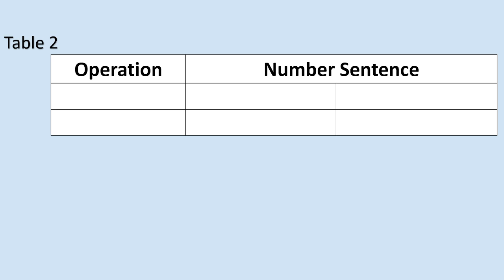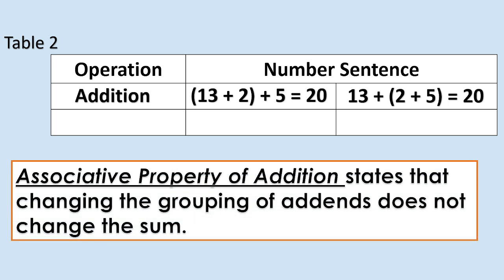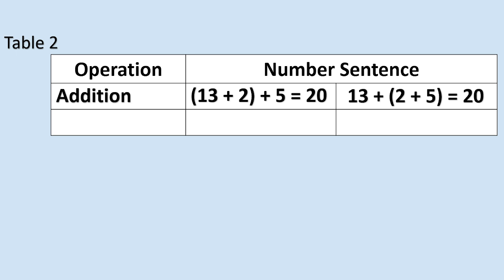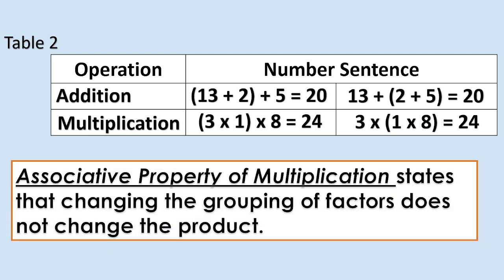Next, the associative property of addition states that changing the grouping of addends does not change the sum. For the operation multiplication, the associative property of multiplication states that changing the grouping of factors does not change the product.